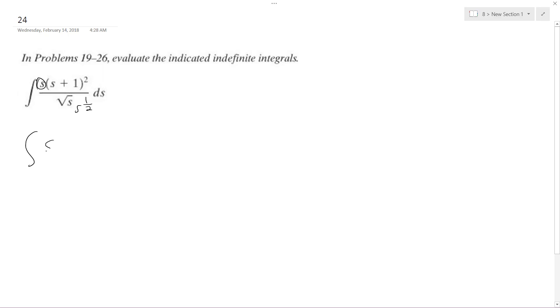What I end up with is the integral of s raised to the one-half times s plus one squared. I'll just multiply this out. So I get s to the one-half times s squared plus 2s plus 1.